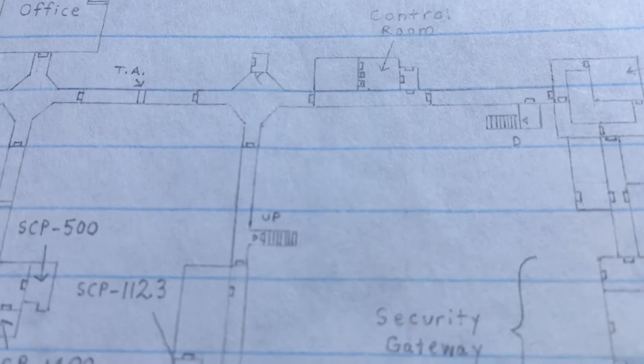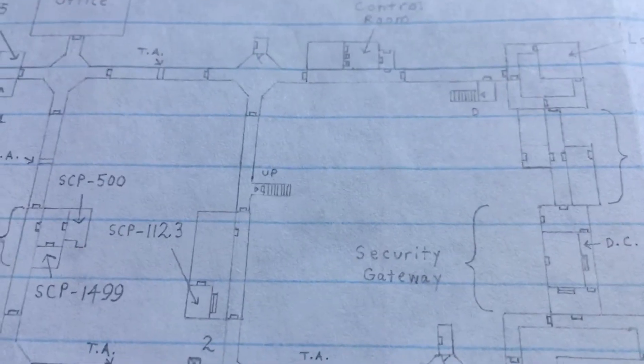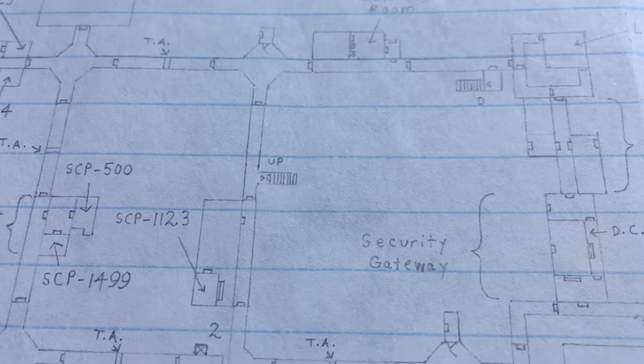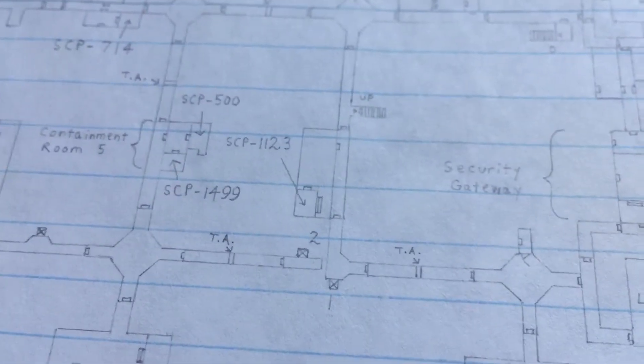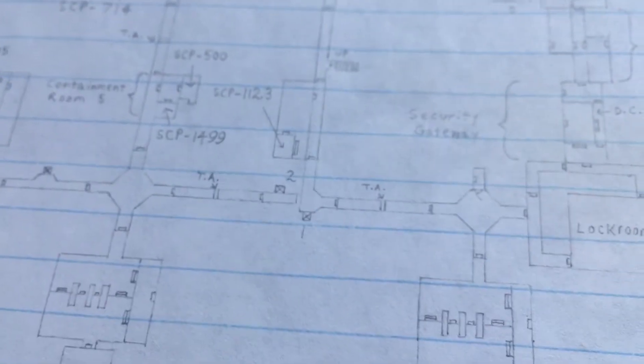These elevators right here lead down to the storage area with SCP-939. And these stairs lead up to an office which has a switch to turn off the lockdown in the heavy containment zone so you can go there. It's going to remain locked unless you push that switch off if you want to progress.